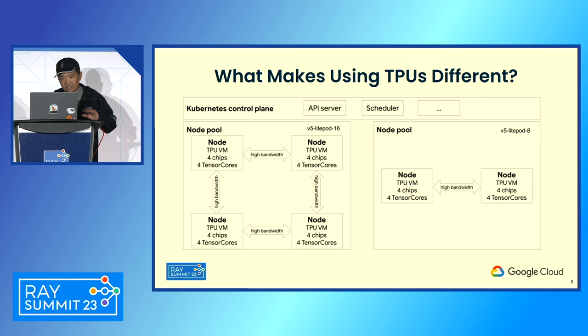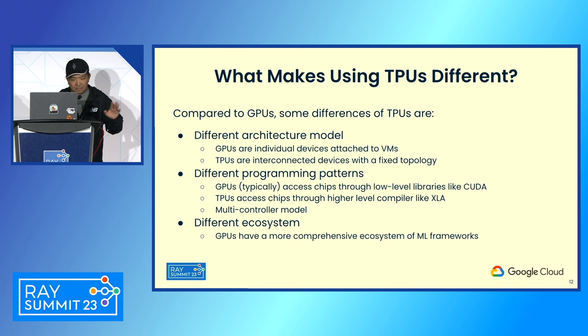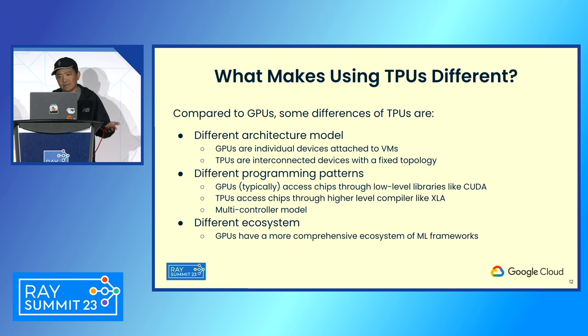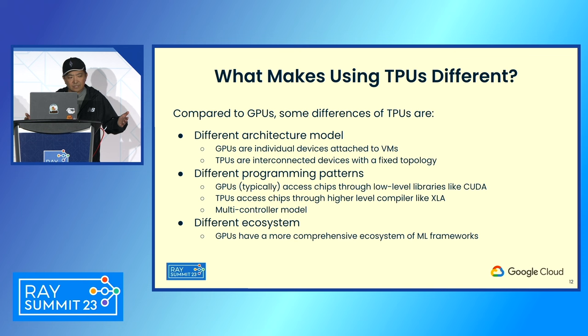Each TPU host must be aware of its own environment — its own index and the host names of all the other hosts in the TPU slice. Another major difference is the programming pattern. GPUs access chips through low-level libraries like CUDA. For TPUs, we access chips through a higher-level compiler like XLA. Using XLA comes with a trade-off: the advantage is it does many optimizations for you, but the disadvantage is it's less customizable. TPUs mostly run with a multi-controller model, which means you must ensure the same workload is running on each host.